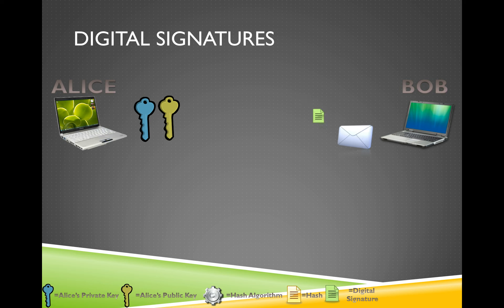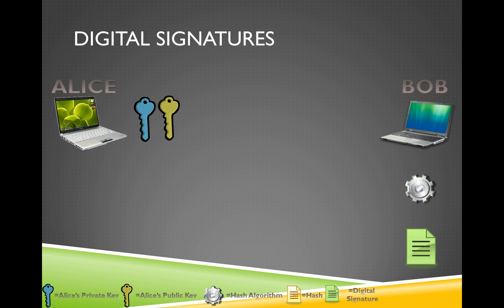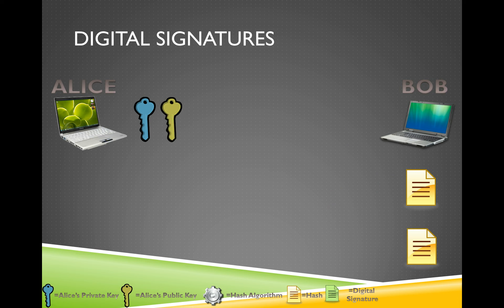Bob now has to validate the signature. He grabs the email and the signature, and runs the email through the same hashing algorithm that Alice used to get a message digest. Bob then decrypts the signature that Alice included in the email using Alice's public key. He then compares his hash to the hash that Alice previously computed and determines if they match. If they match, because the key pairs work — he was able to decrypt the signature with Alice's public key — he knows the email was in fact sent from her. And since the hashes match, he also knows the data wasn't altered in transit.